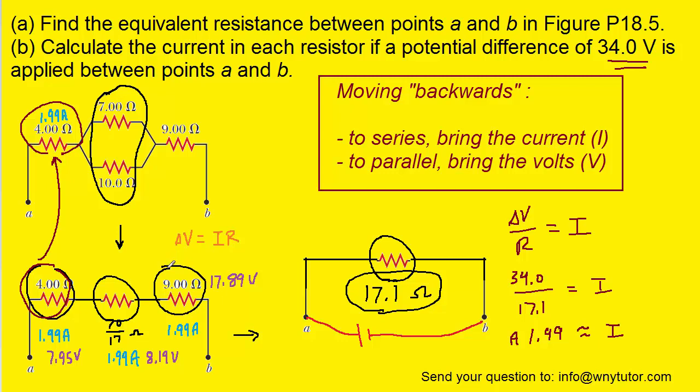Similarly, if we work backwards from the 9 Ohm resistor to this resistor here, which is where it came from, it's still the same resistor. So if the current on it was 1.99 amps down here, that means the current here is still 1.99 amps.